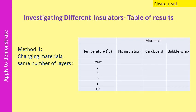The first method is changing the materials but keeping the same number of layers. Your results table would have time, no insulation, cardboard, and bubble wrap as columns. Write down the temperature at the start and measure at different intervals, or just measure the temperature at the end of the experiment.